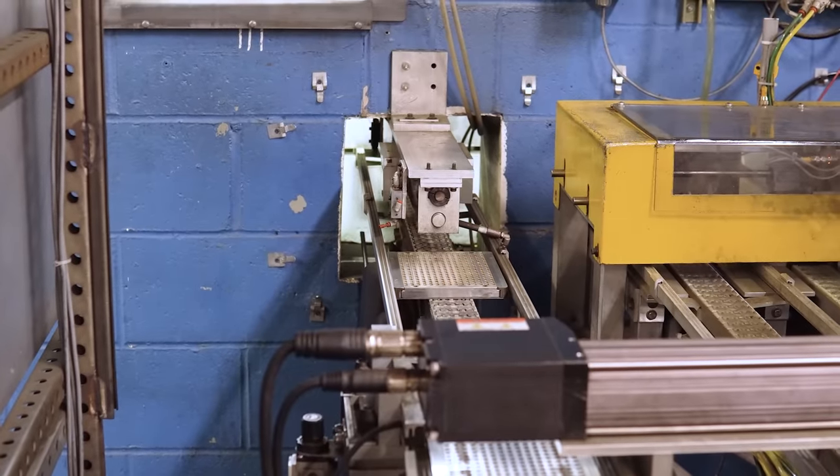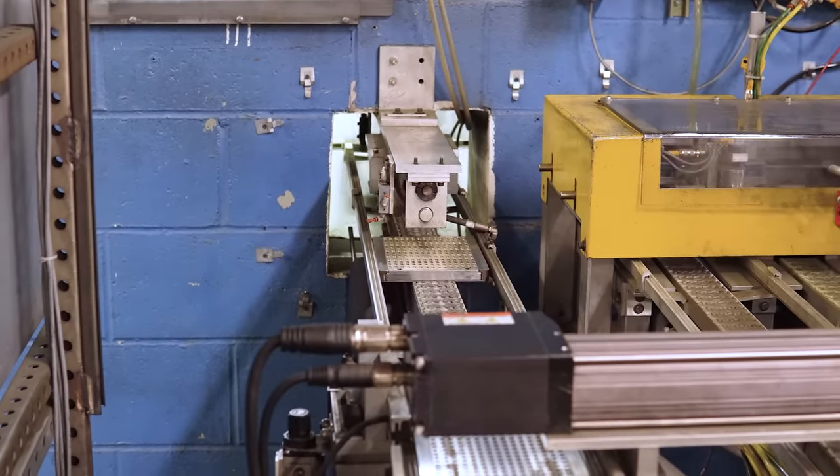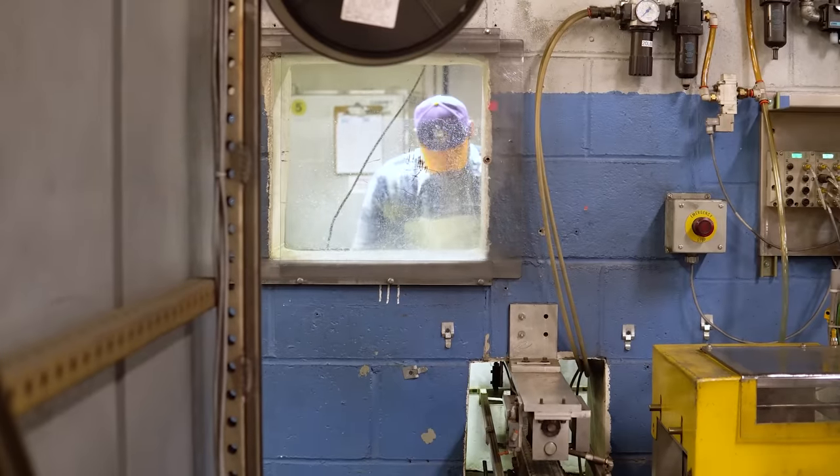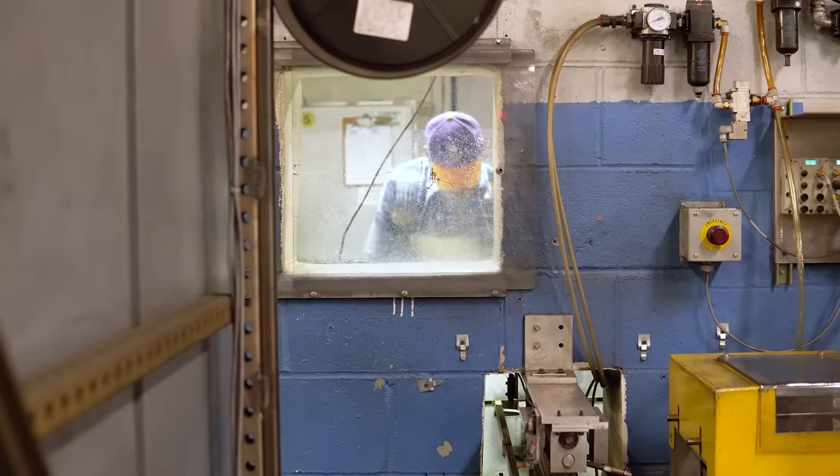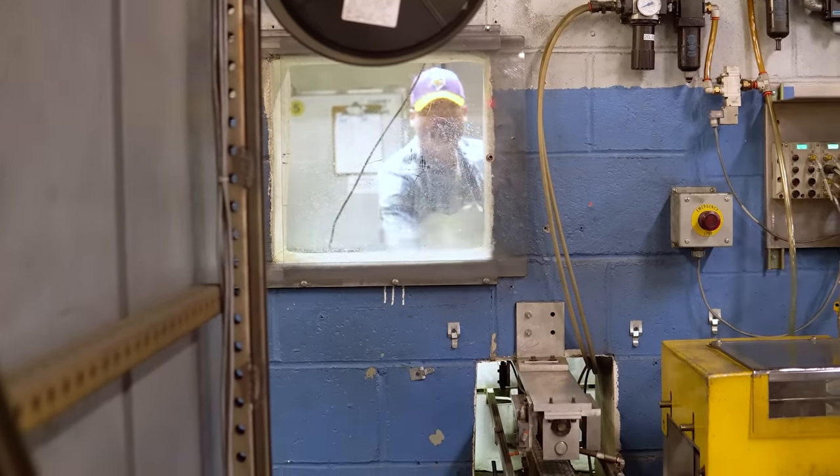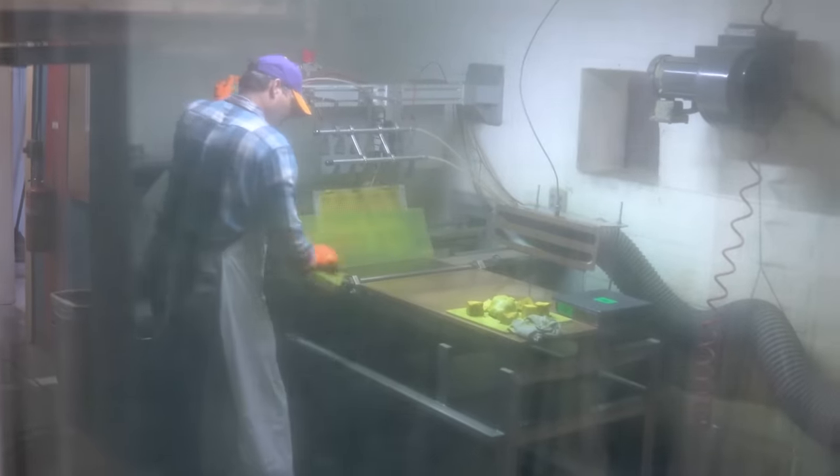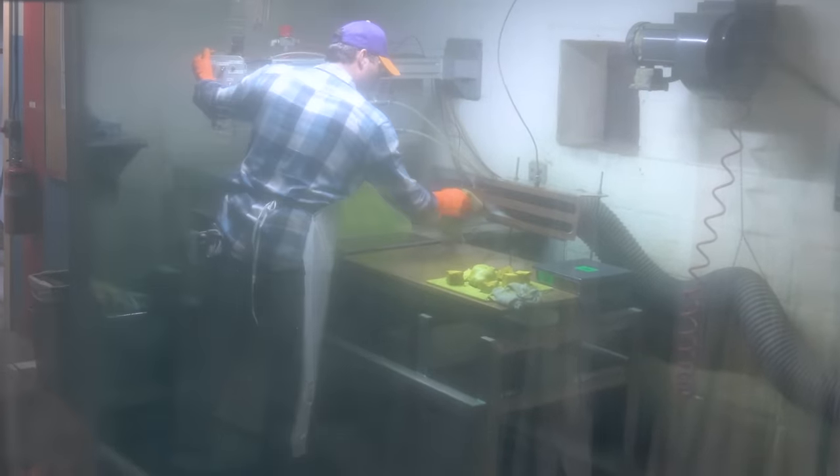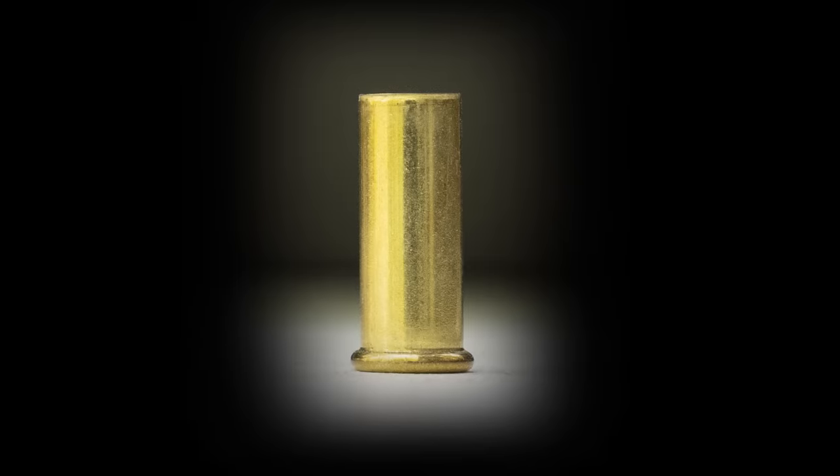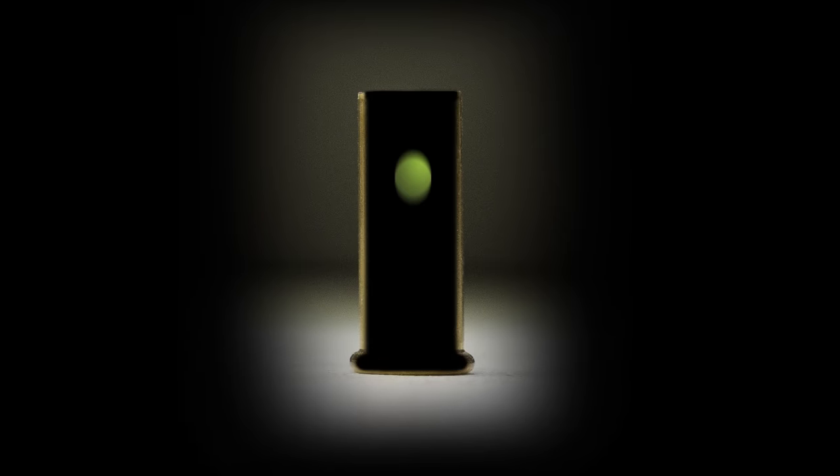The plates roll into the charging room to be primed. The primer comes in the form of a wet, green, clay-like substance. The moisture helps prevent premature combustion. Static electricity is another hazard, so electronic devices are not allowed in the charging room. Small pellets of the wet primer are dropped into the bottom of each case.